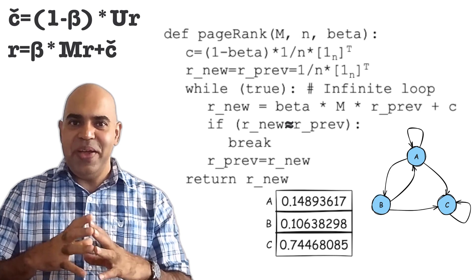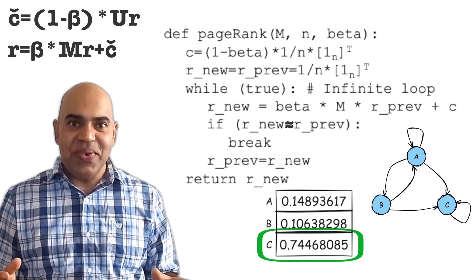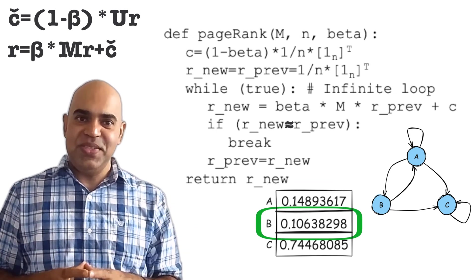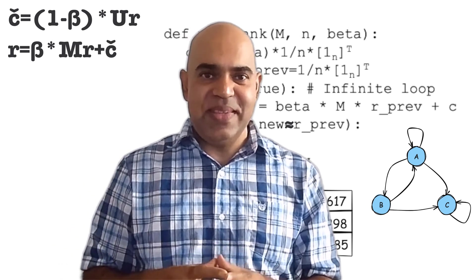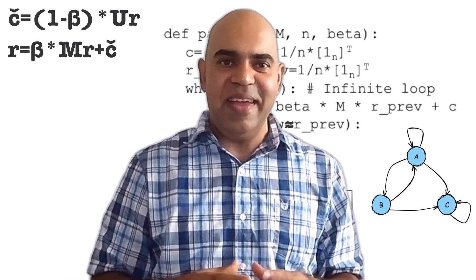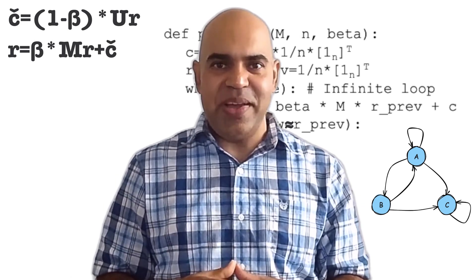Not all the page rank juice can end up in website C anymore. Other websites have some page rank probabilities too. That is it. This pseudocode is the basis of Google's beginning. In the next video, let us implement the page rank algorithm using Python.